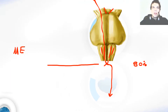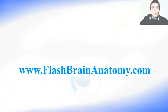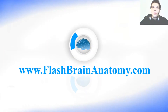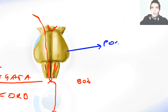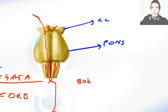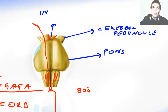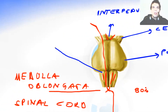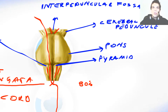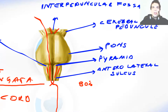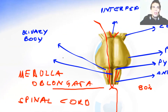Up there we had the medulla oblongata, and down is the spinal cord. Let's write this all down. This was the pons. This was the cerebral peduncle. This was the interpeduncular fossa. Then we had the olivary body. We had the pyramids. We had the anterolateral sulcus over here, and the anterior median sulcus over here.